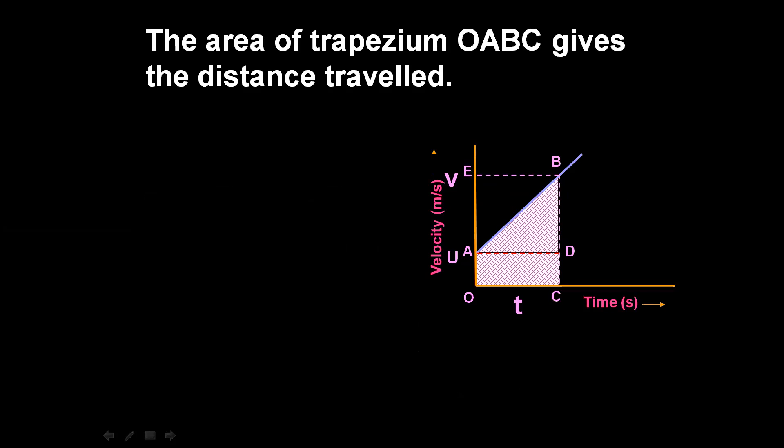This is a velocity-time graph. The velocity is on the y-axis and time is on the x-axis. This represents distance, and the graph forms a trapezium shape.